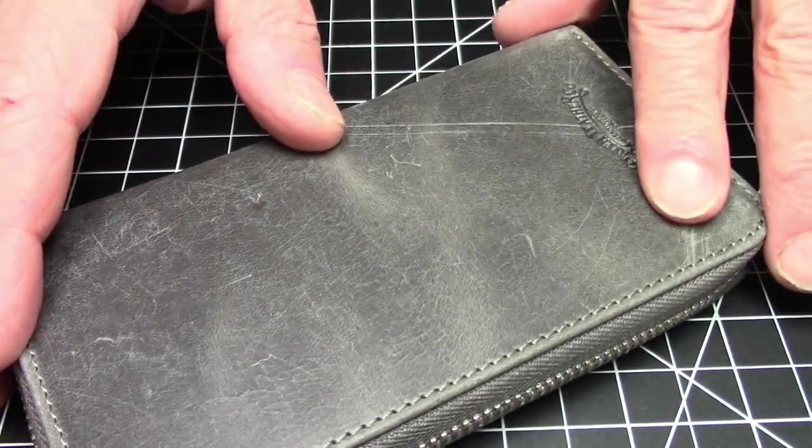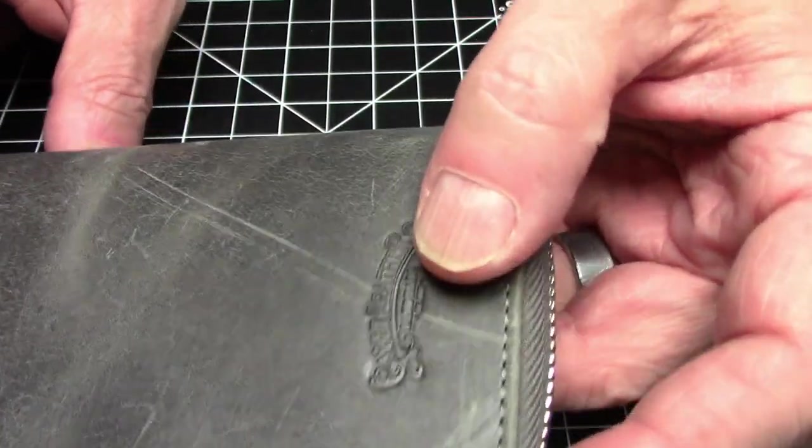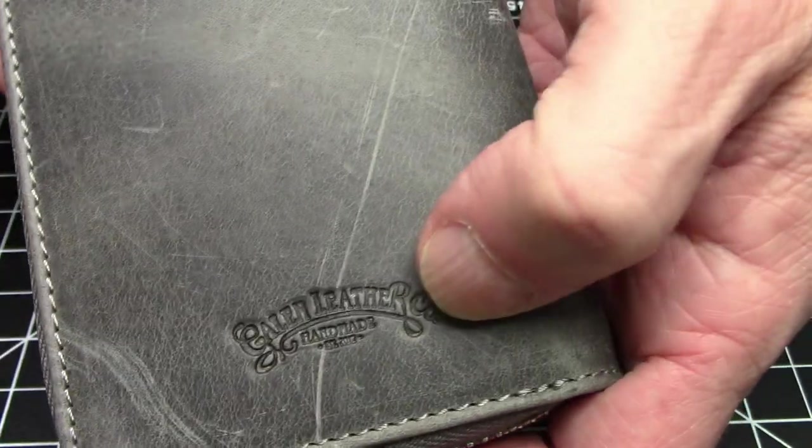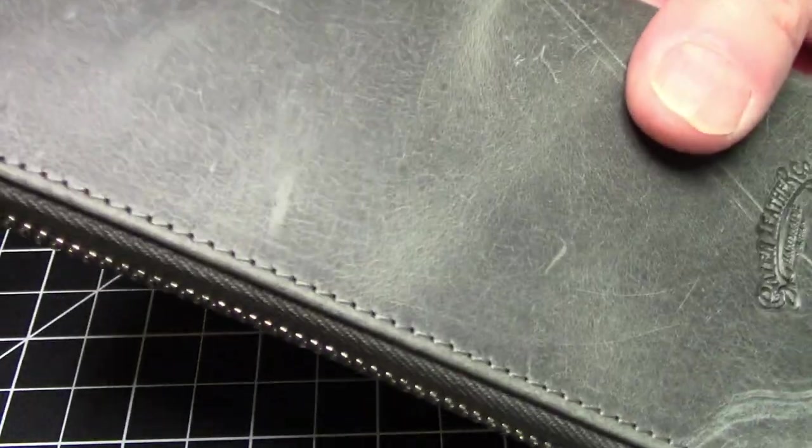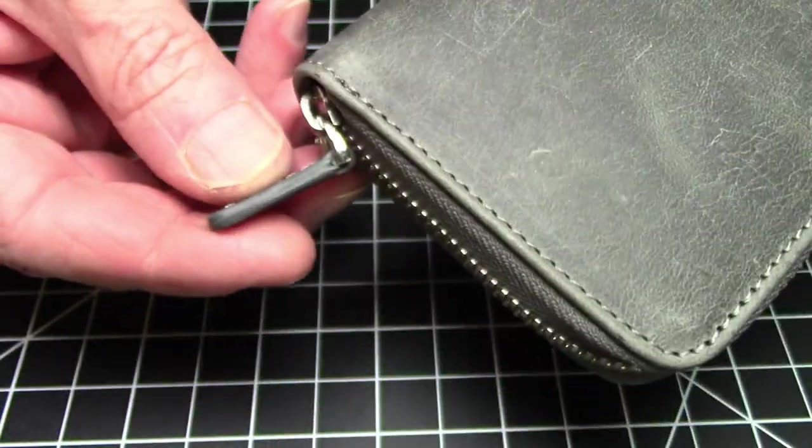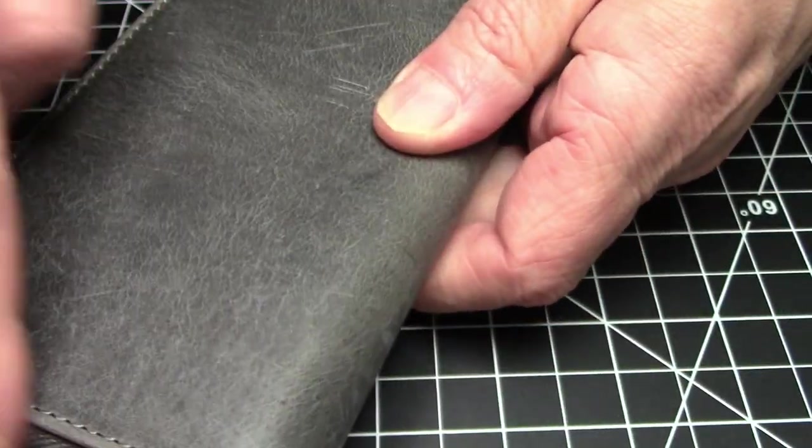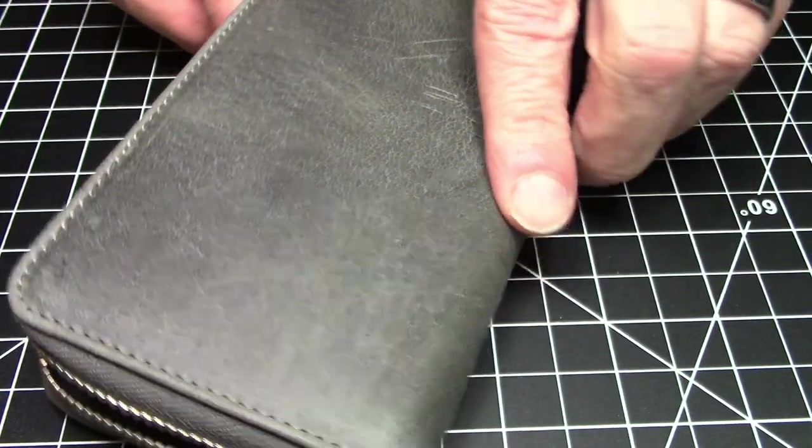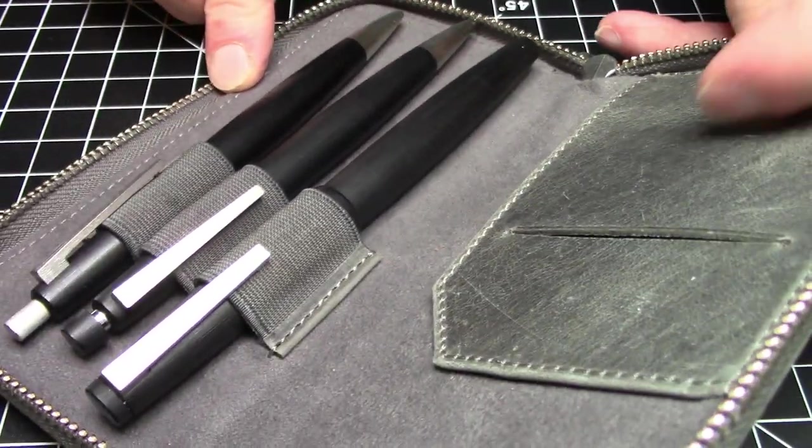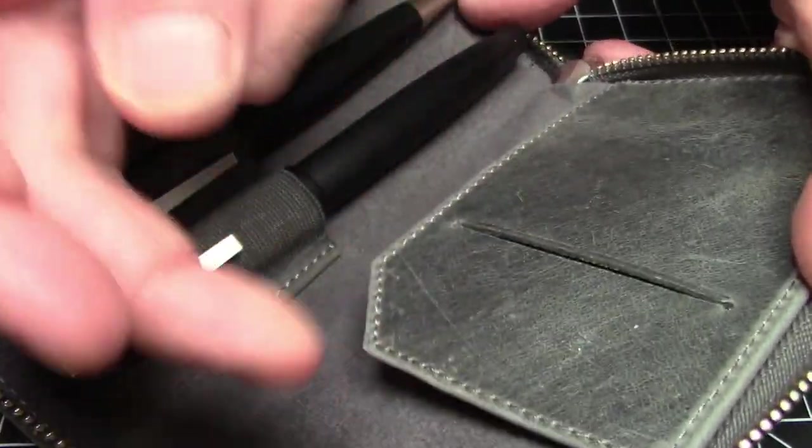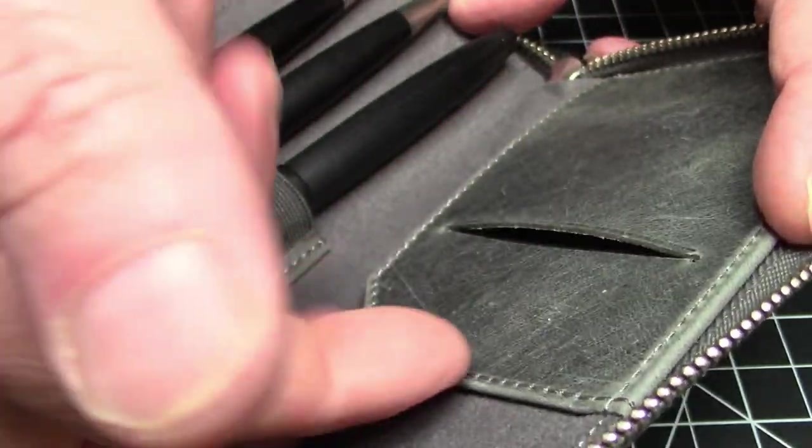These are extraordinarily well made. It's got the Galen leather branding on here quite subtly in fact but it's quite nice and it's got a very well made zipper with a zipper pull and if you would open it up it zips around three sides and you will then see the inside.